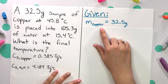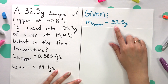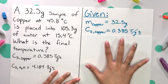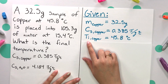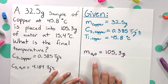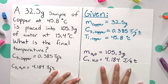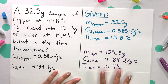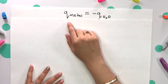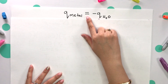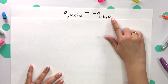Let's identify our givens. The mass of copper is 32.5 grams. We're given the specific heat capacity of copper and the initial temperature of copper at 45.8 degrees Celsius. We're also given the mass of water, specific heat capacity of water, and the initial temperature of water. The proper formula for this type of example is: heat of our metal equals the negative heat of our water.